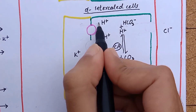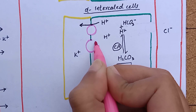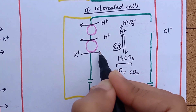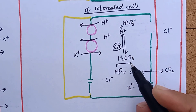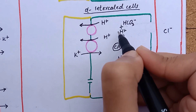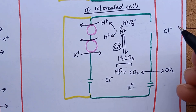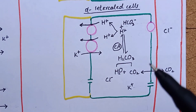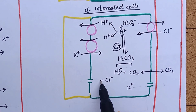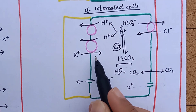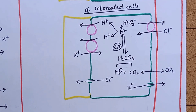Alpha intercalated cells secrete hydrogen ion via hydrogen ATPase and hydrogen-potassium ATPase transporters. Hydrogen here is generated by the action of carbonic anhydrase on carbon dioxide and water to form carbonic acid, which dissociates into hydrogen and bicarbonate ion. These cells are especially important in eliminating hydrogen while reabsorbing bicarbonate in acidosis. Notably, bicarbonate reabsorption here is not sodium-dependent. Chloride moves along its concentration gradient, and potassium is reabsorbed by its own channel. Beta intercalated cells have hydrogen and bicarbonate transporters on opposite sides of the cell membrane compared to alpha cells, and therefore reabsorb hydrogen and secrete bicarbonate ion in alkalosis.